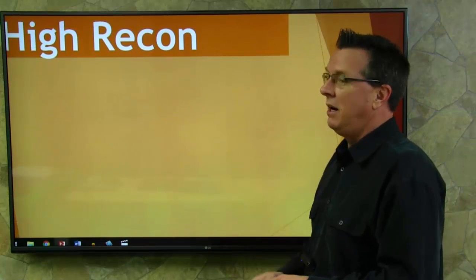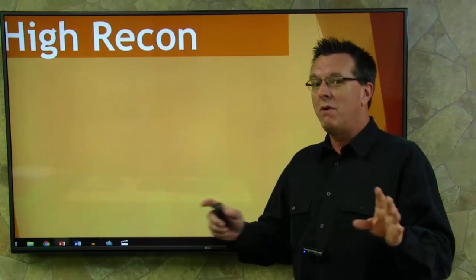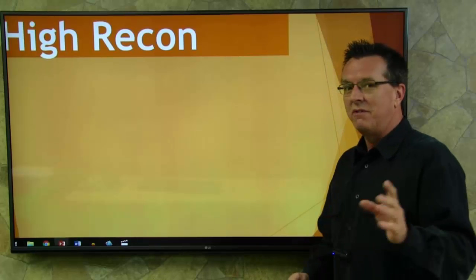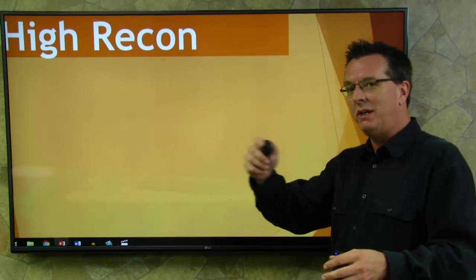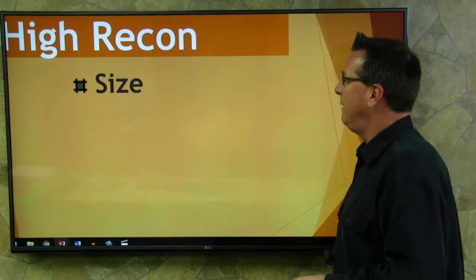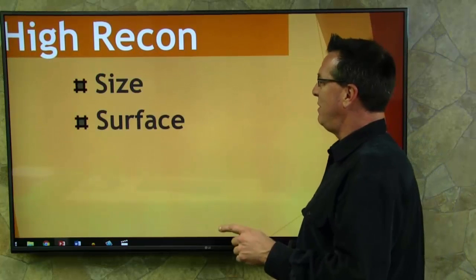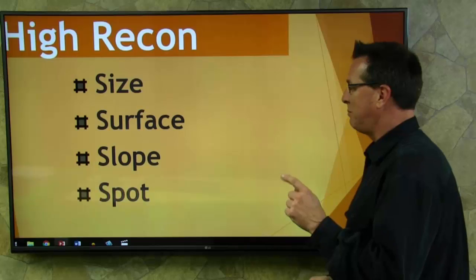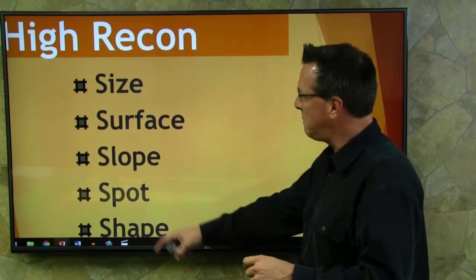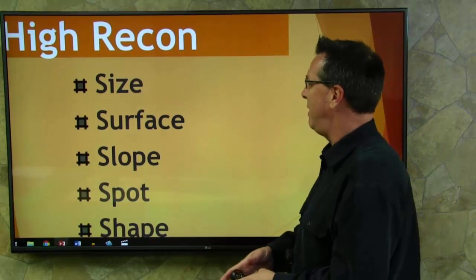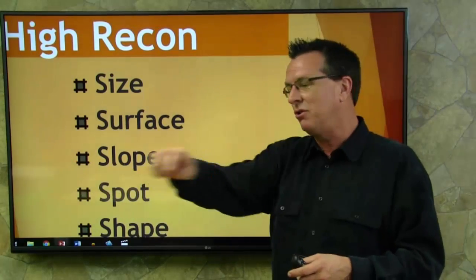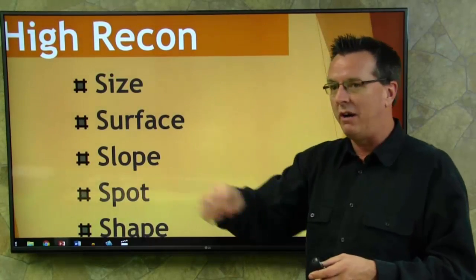During your high recon, if you can remember these, your examiner is going to love you for it — the five S's. You're going around looking at your spot on the ground: size, surface, slope, spot, and shape — the actual shape of your landing area. The five S's. Think about all these things as you're circling during your high recon.